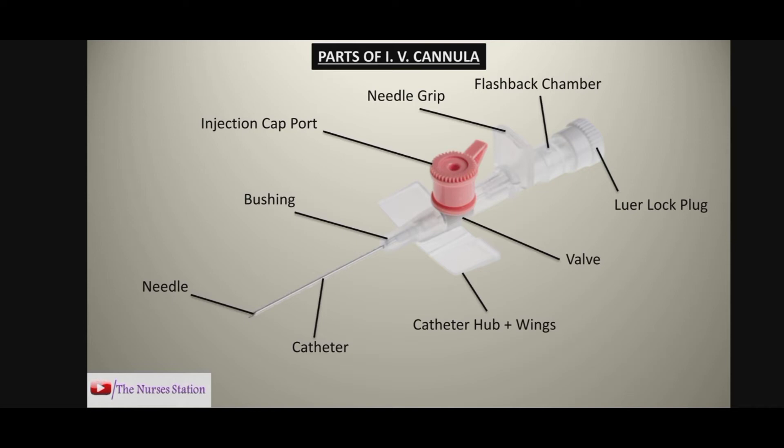Basically, there are three types of IV cannulas: the peripheral IV cannula, the central line IV cannula, and the midline catheter. In this video, we are going to talk about the peripheral IV cannula. The peripheral IV cannula also comes in different types depending on size, gauge, and flow rate, and these have a different color coding system which you will see in the subsequent slides.